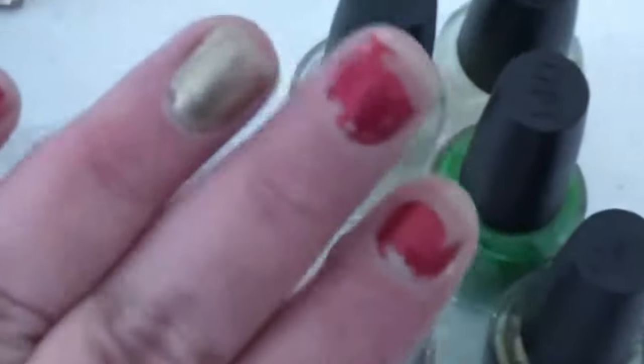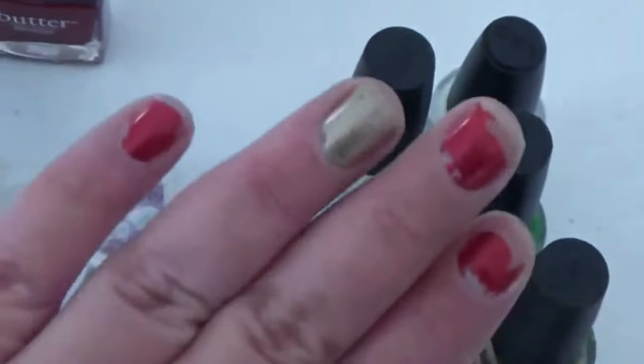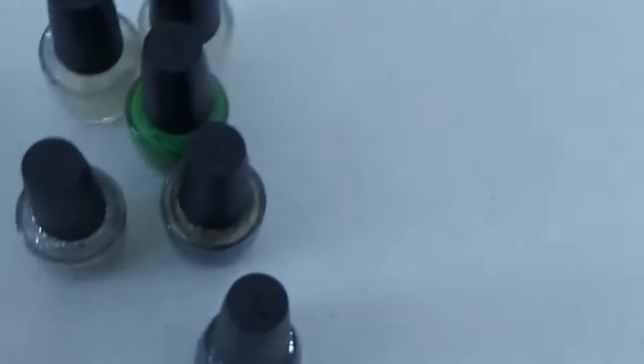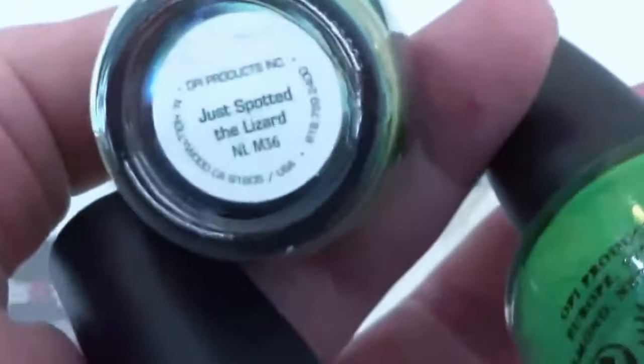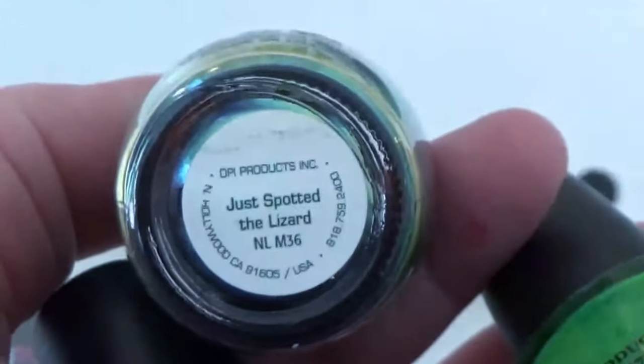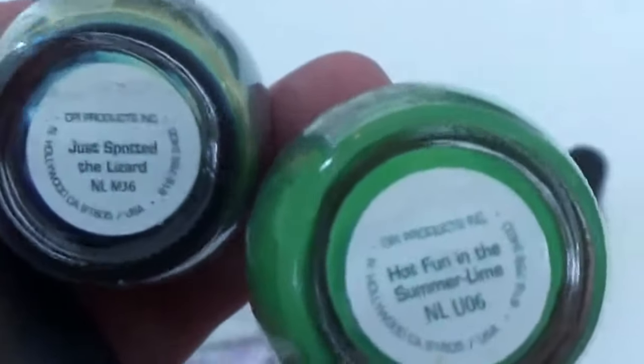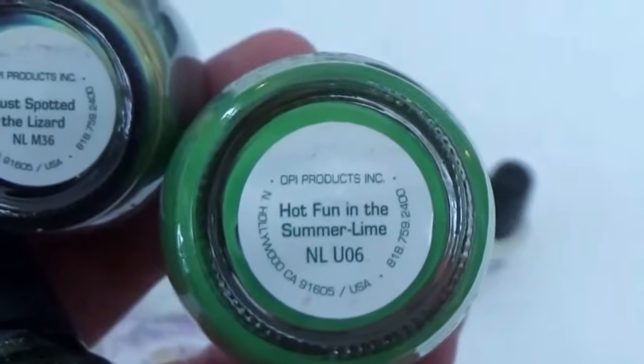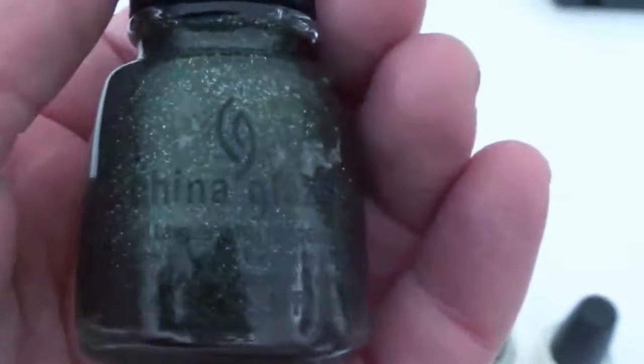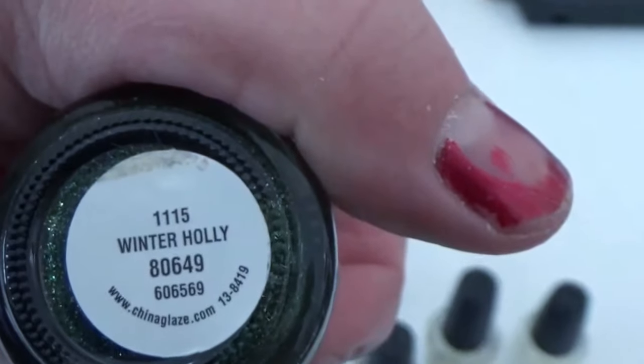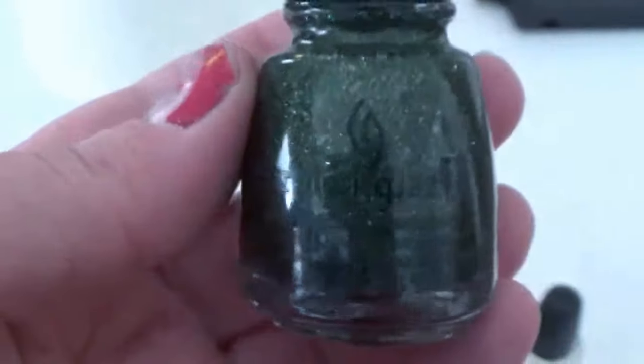And then I usually, as you could tell with my horrible nails right now, on my ring finger, I usually do a different color. And to keep with the whole holiday and whatnot, I'm going to do some kind of green. This one's from OPI. It's Just Spotted the Lizard. This one is also from OPI. It's Hot Fun in the Summer Lime. This one is actually China Glaze. And it is called Winter Holly. And because of that, I think I'm going to go with Winter Holly.